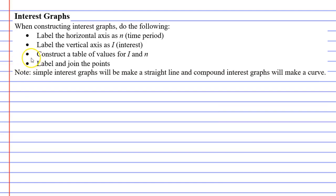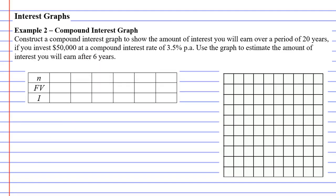The instructions mention that you need to label the horizontal axis as n and label the vertical axis as i. So our horizontal axis is n and our vertical axis is i.